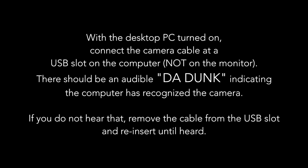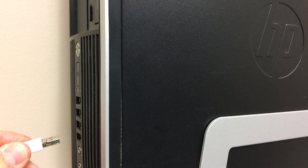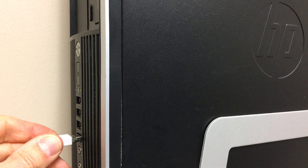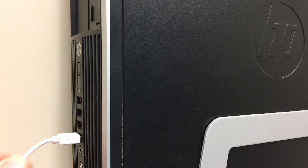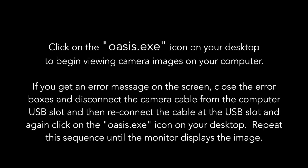With the computer turned on, you can connect the camera via the USB slot. There is an audible sound that should be heard indicating the computer has recognized the camera. You can then visualize images on the screen by clicking the Oasis icon.